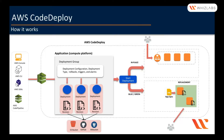ECS and AWS Lambda will only have the blue-green deployment type, and conceptually they pretty much work the same as described.